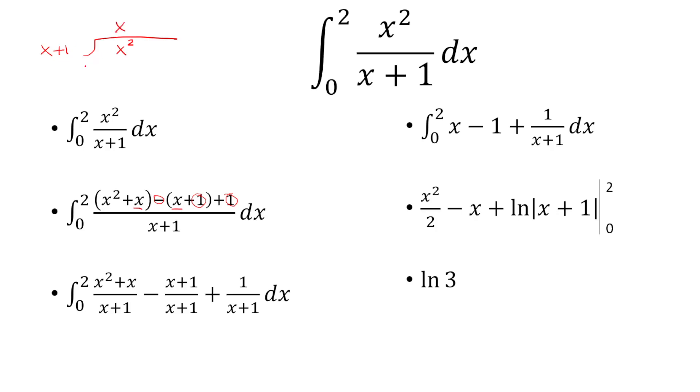x times x gives us x squared. So we distribute the x with x plus 1. That gives us a negative x. And how many times does x go into negative x? That's minus 1. So you multiply negative 1 with x plus 1 to get negative x minus 1.